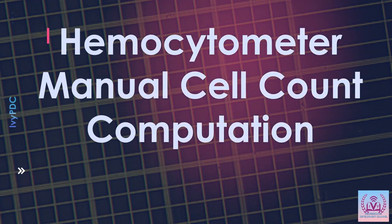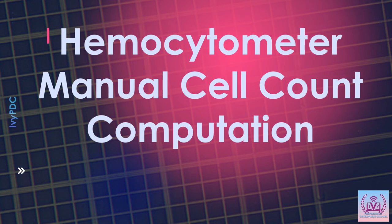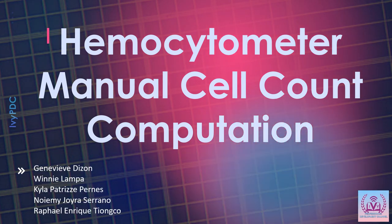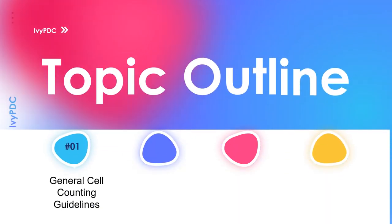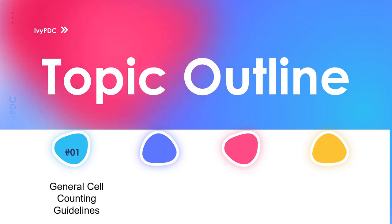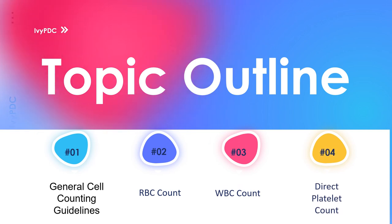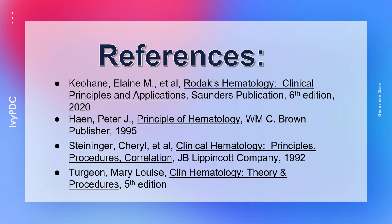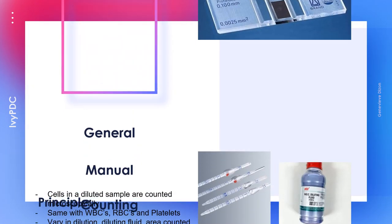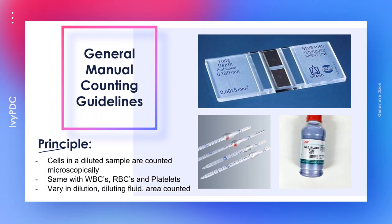Hello everyone, this video is about the different manual cell counts using the hemocytometer, together with sample problems in their computation. We will start with the general guidelines for manual cell counts and then proceed with sample problems for red blood cell count, white blood cell count, and the direct platelet count. The information from this video will mainly come from Rodak's Hematology, but other principles from Brown, Steininger, and Turgeon are also adapted.